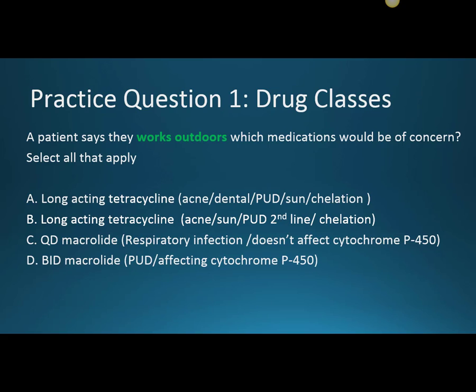The first macrolide, azithromycin, I think of for respiratory infections, and it does not affect the cytochrome P450 system. Clarithromycin is a BID macrolide for peptic ulcer disease that does affect cytochrome P450. A common mistake students make is trying to memorize every side effect from a reference. It's better to focus on what types of questions appear on your practice exams and prioritize the clinical pearls most likely to be tested.